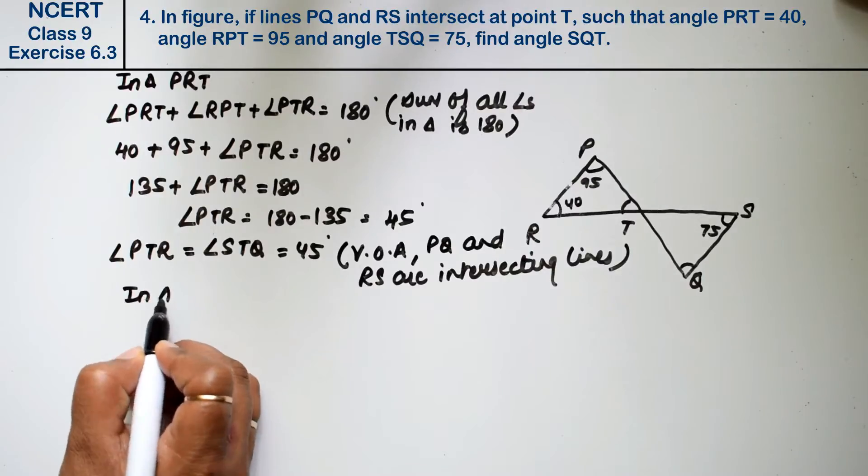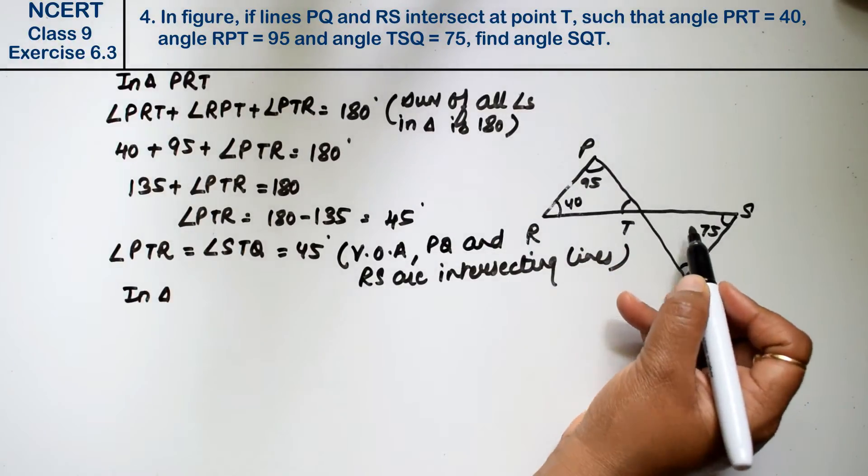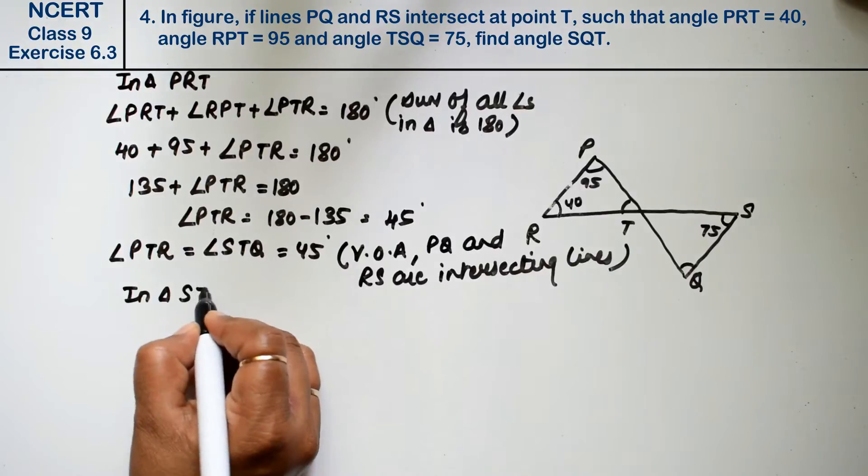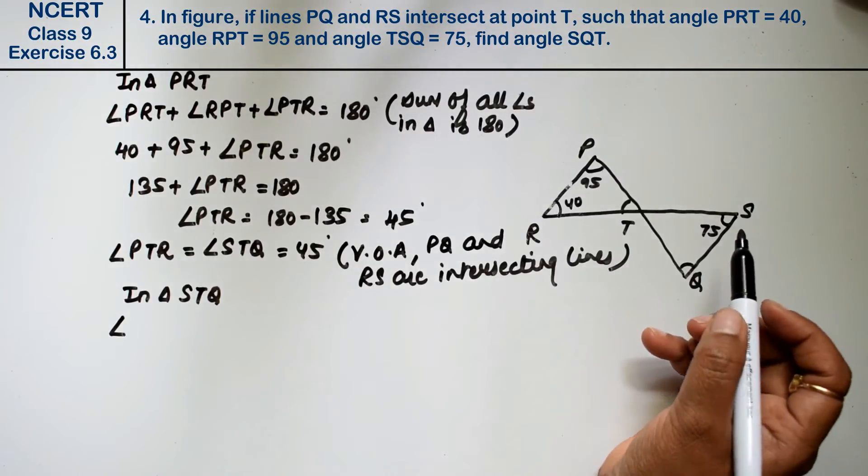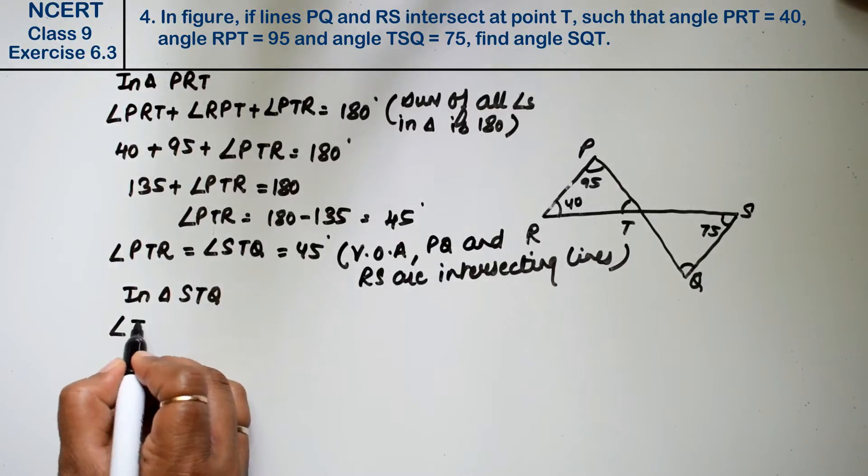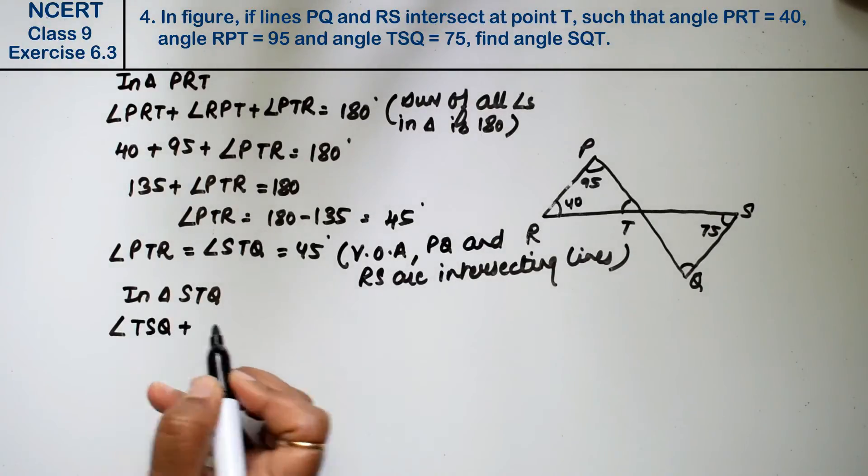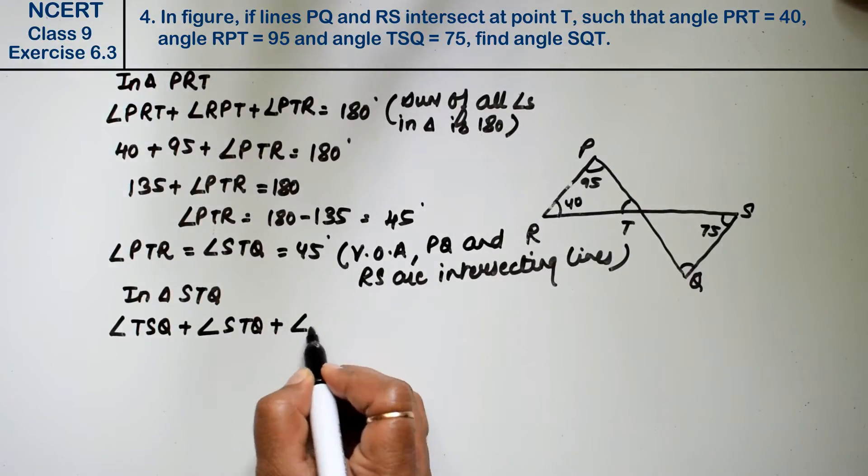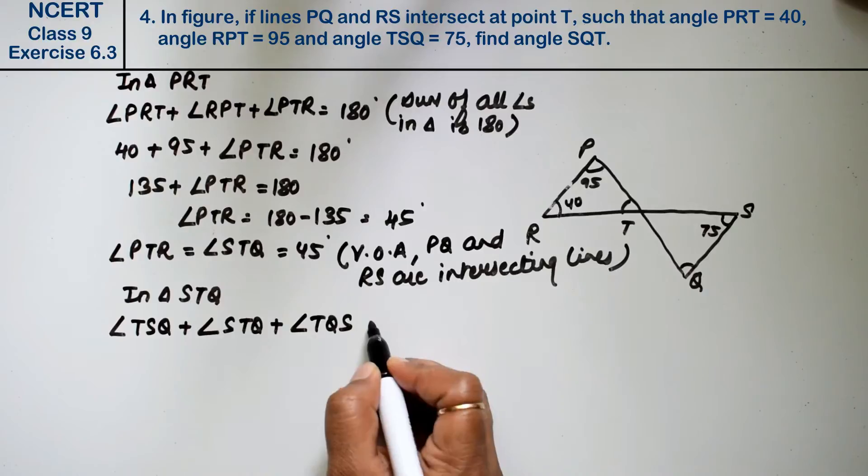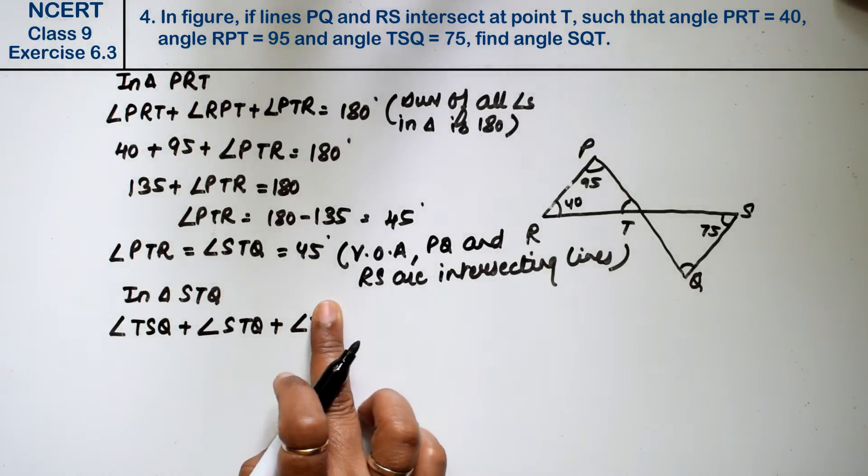Now in triangle STQ, we have angle TSQ plus angle STQ plus angle TQS. TQS is called SQT. This is SQT.